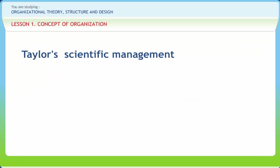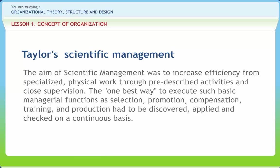The older theories of organizations are classified as classical theories. First is Taylor's scientific management. The concept of scientific management implies the application of science to management, aiming to increase efficiency from specialized physical work through pre-described activities and close supervision. It is based on four basic principles: first, each task must be scientifically designed to replace rule-of-thumb methods; second, workers must be scientifically selected and trained; third, scientifically designed jobs and workers must be matched together; and fourth, there must be a division of labor and cooperation between management and workers.